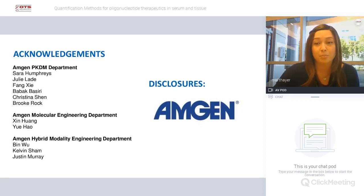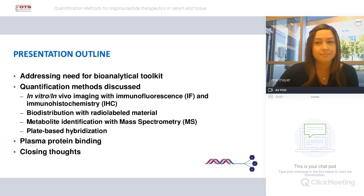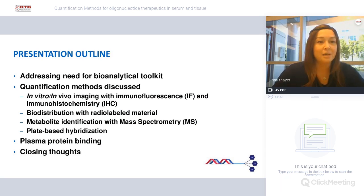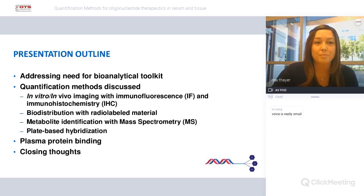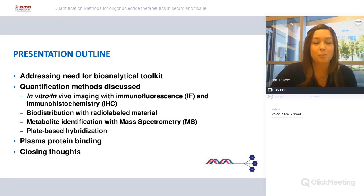Putting forward my disclosure that I'm an employee and stockholder of Amgen. Here is a presentation outline of the topics we will cover today. First, we'll address the need for a bioanalytical toolkit in this field. Then we'll go into quantification methods: in vitro and in vivo imaging with immunofluorescence and immunohistochemistry, biodistribution with radiolabeled material, metabolite identification with mass spec, plate-based hybridization assays, and plasma protein binding.